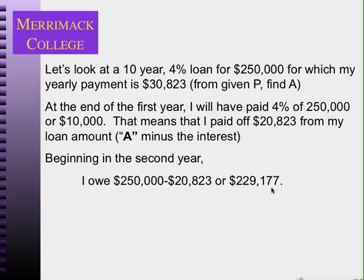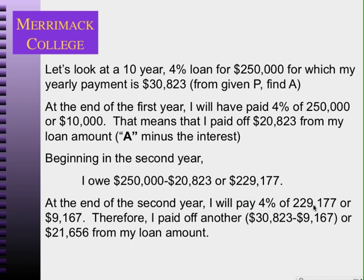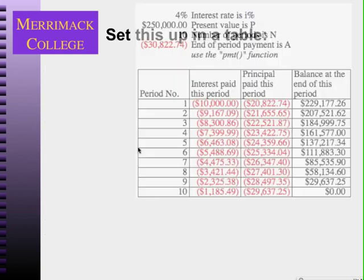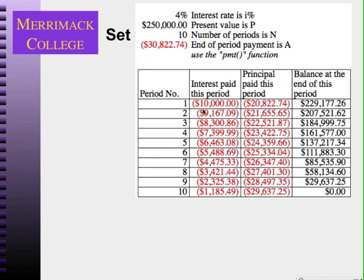So beginning in the second year I owe $229,177. At the end of the second year I pay four percent of that balance, which is $9,167 in interest, and my yearly payment is still $30,823, so the remainder reduces my balance. I can set this up in a table: in year one I paid $10,000 in interest and $20,823 in principal, which add up to the yearly payment and give a balance of $229,177.